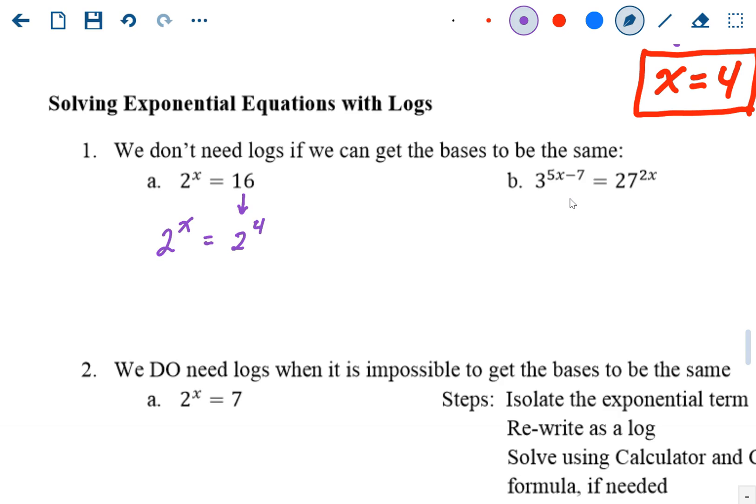Okay, so now once you have the bases the same, you got 2 to the x equals 2 to the fourth, which means the exponents have to be the same, which means that x has to be 4.